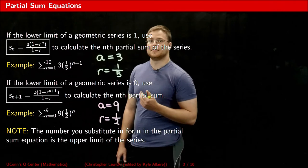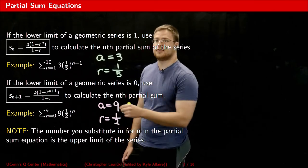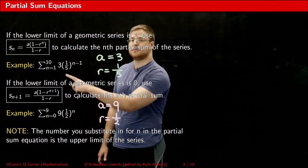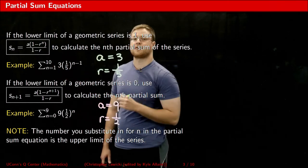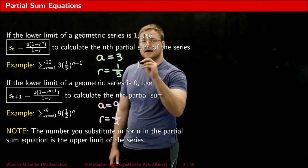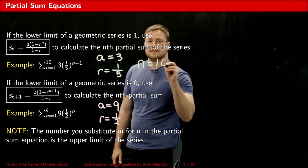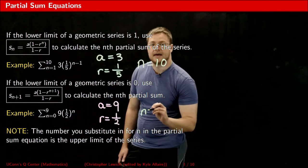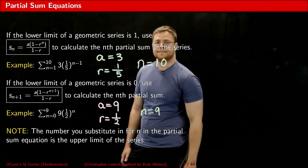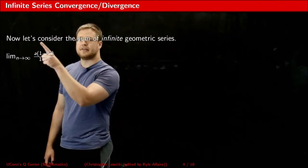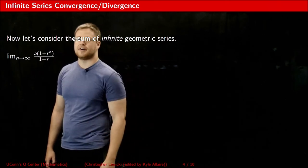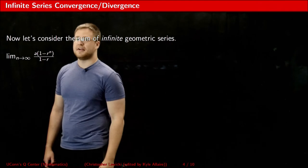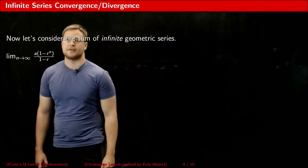As for the n value, the n value that you substitute into either version of the formula is whatever the upper limit of your series is. So in this example, I'm going to substitute 10 for n, whereas in this example, I'm going to substitute 9 for n. So far, we have been using this formula to calculate the nth partial sum of geometric series. If we were to take the limit as n goes to infinity of this formula, this would give us the sum of an infinite number of terms.